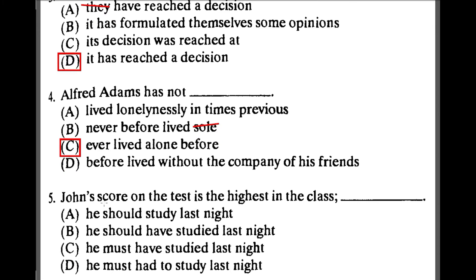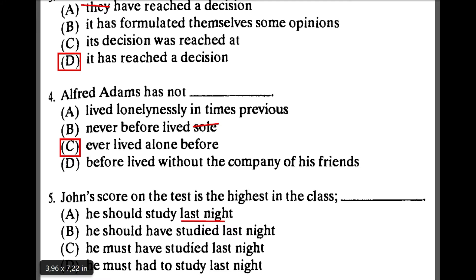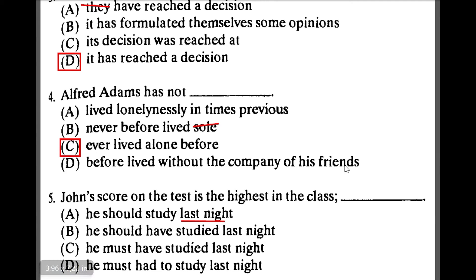Number five: 'John's score on the test is the highest in the class.' A — 'he should study last night' — is wrong because we can't combine 'should' with 'last night' without the perfect form. B — 'he should have studied last night' — uses the correct past modal form. C — 'he must have studied last night' — 'must have' means 'definitely did'. D — 'he must have' — is incomplete, so D is wrong. Initially B seems correct.